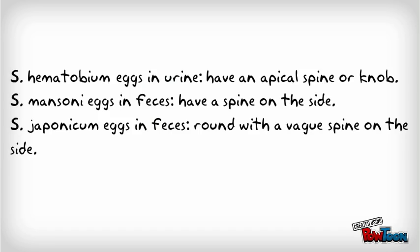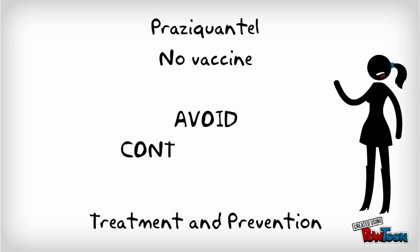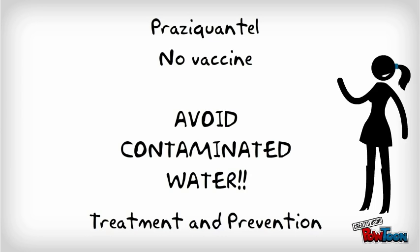For treatment and prevention: praziquantel is effective against all three species and there is no vaccine available. Contaminated water should be avoided, and sanitary disposal of sewage and destruction of snails are also good preventative measures.